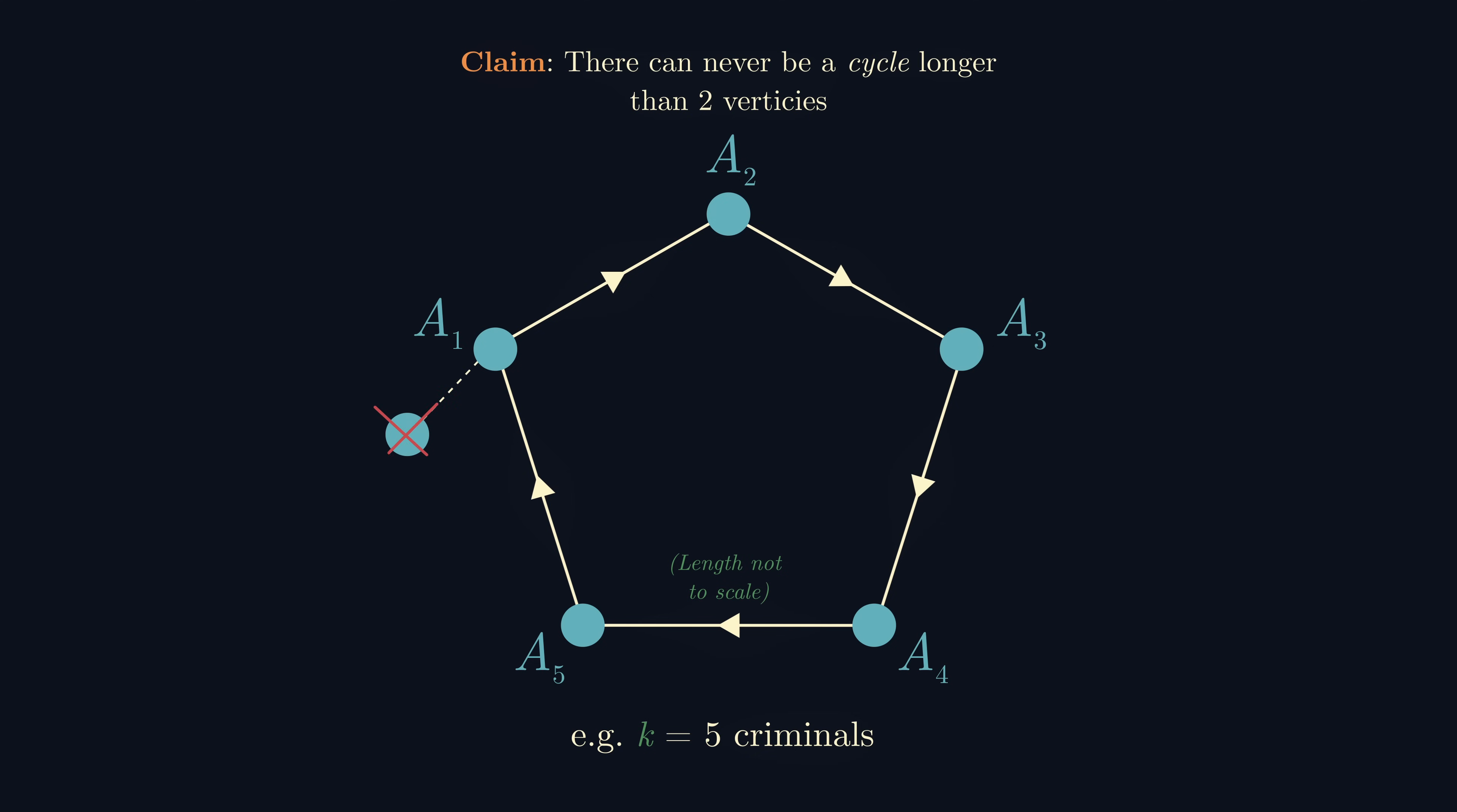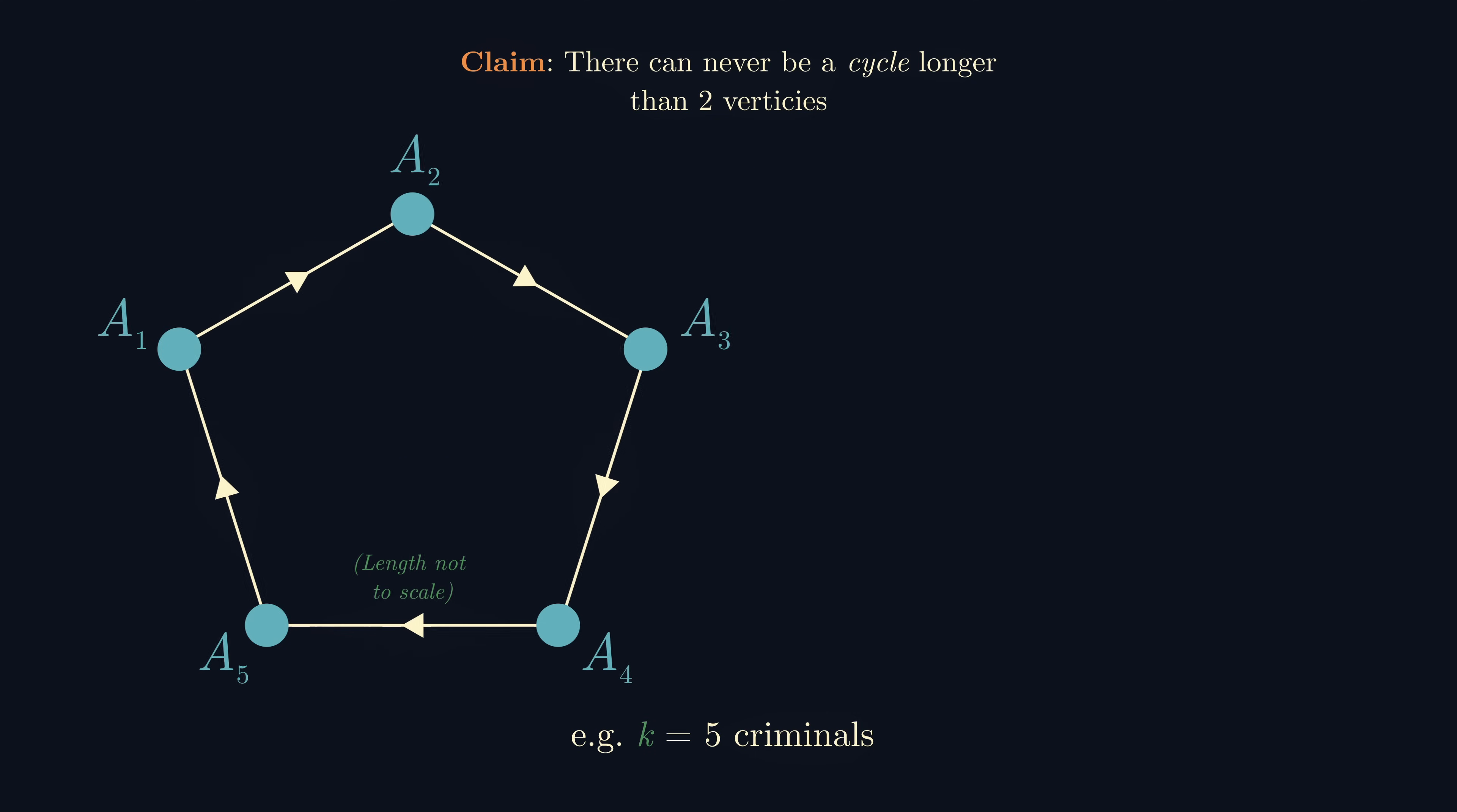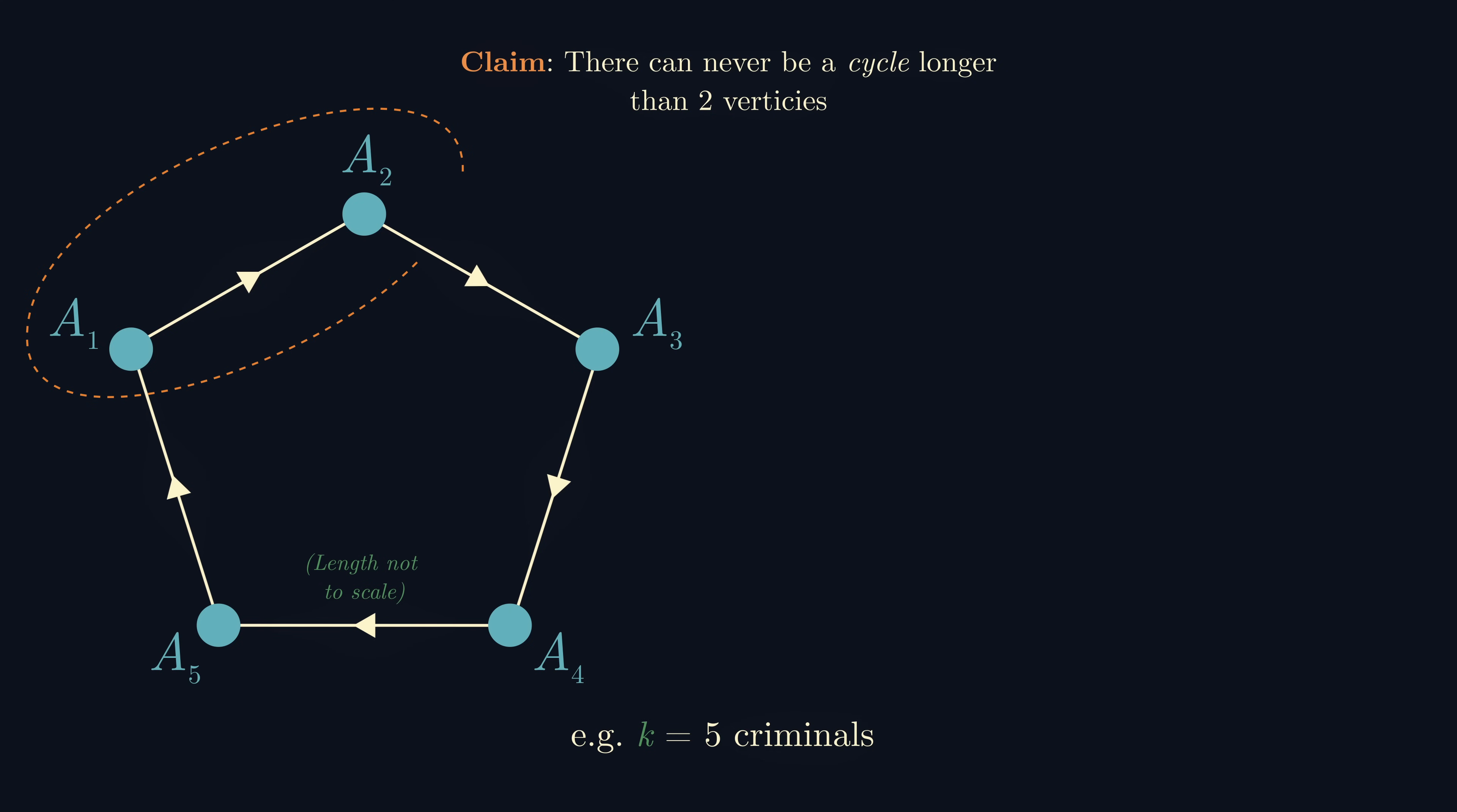Now the key is that a criminal watches another criminal if and only if there is no other criminal closer by. We can use this to form some inequalities. a1 watches a2, so ak is further from a1 than a2. Hence a1a2 is less than aka1. But ak watches a1, so aka1 is less than ak-1ak.